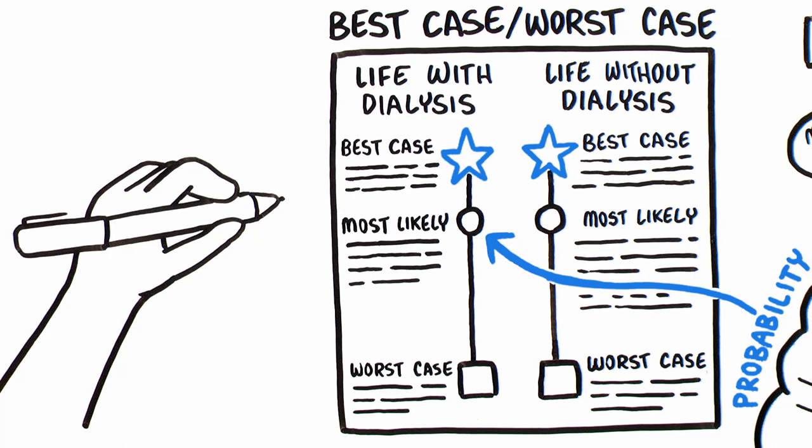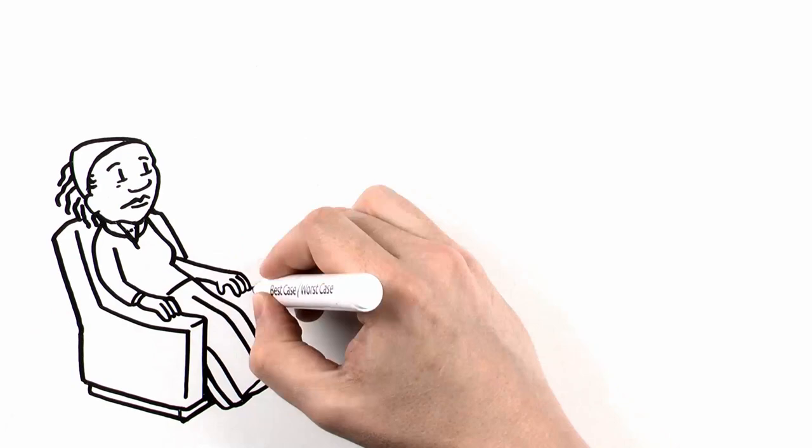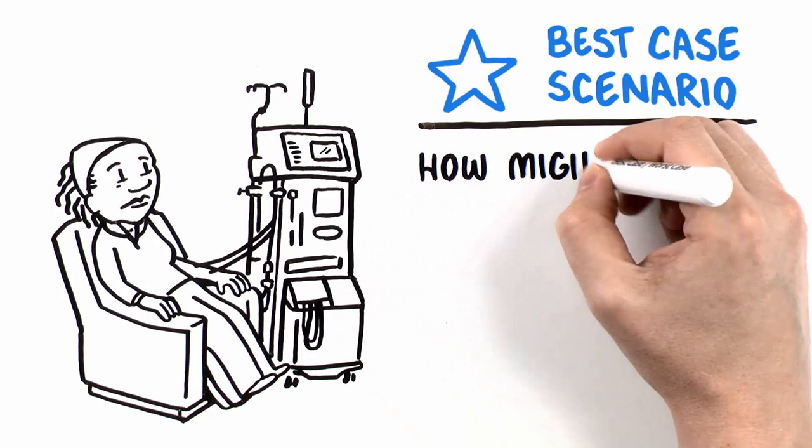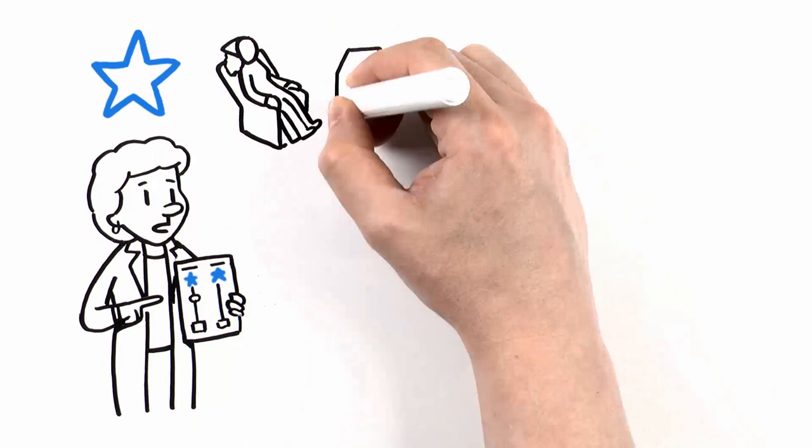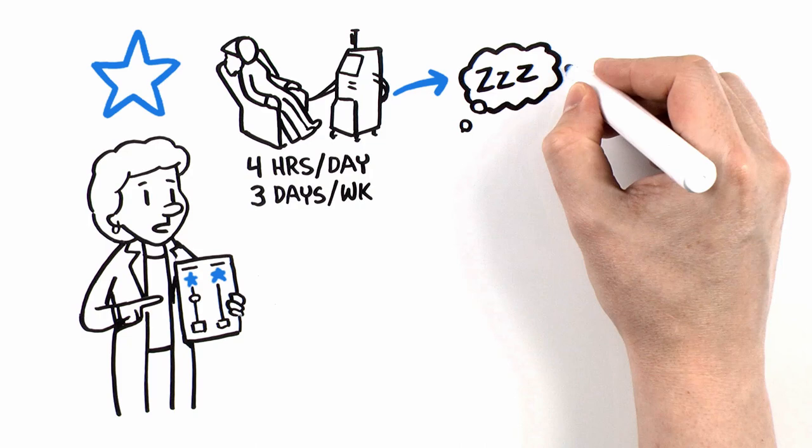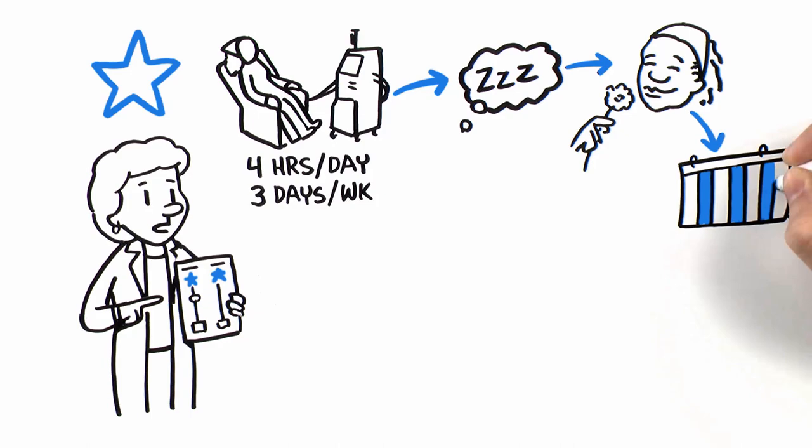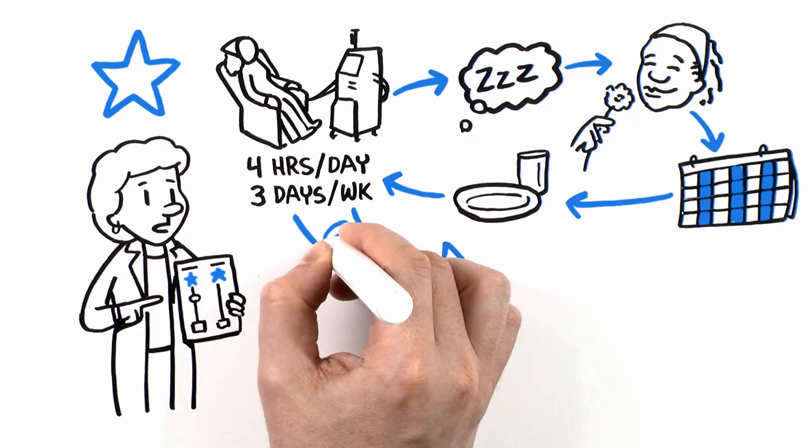Let's get back to Gladys. If she starts dialysis and everything goes well, in the best case scenario, what would life be like? How might she feel after dialysis? How might life change in the short term and over time? Tell the story. In the best case, you'll have dialysis four hours a day, three times a week. After dialysis, you might feel tired, but the next day you'll feel better, probably even better than you feel now. The following day, you'll go back to dialysis. You'll need to watch your diet and how much you drink. If all goes well, your life will be like this for a few years.